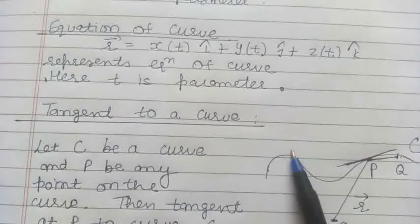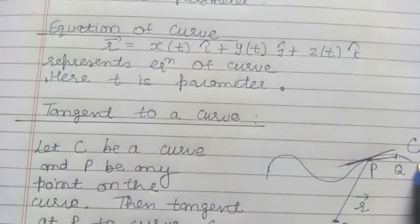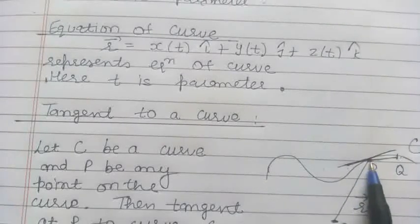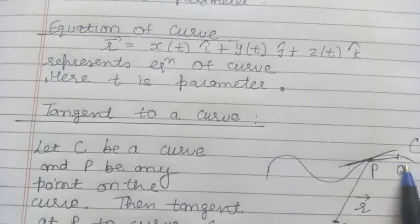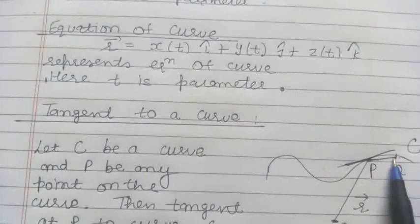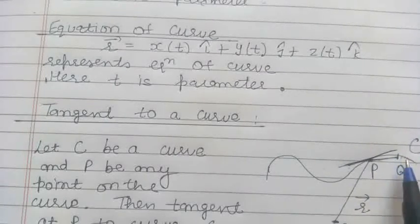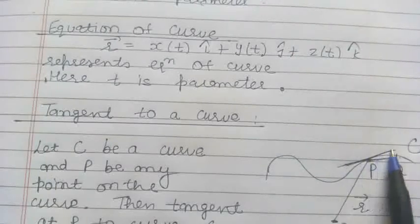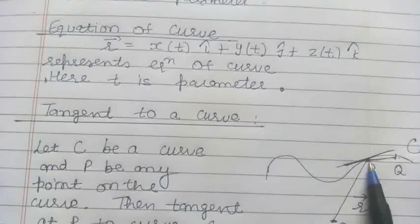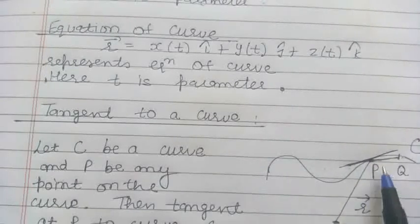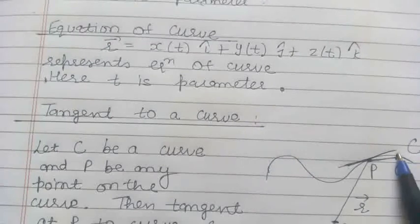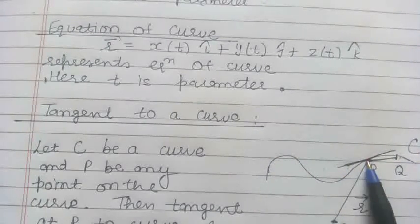The last concept is the tangent to a curve. Let us take a curve C and P is a point on this curve. To define the tangent at point P, let us take another point Q on the curve and join P to Q — this is the chord PQ. As the point Q approaches P, this chord will have a limiting position, and that limiting position is called the tangent to the curve at point P. Thus, the tangent to curve C at point P is the limiting position of the chord PQ as point Q approaches point P along the curve C.